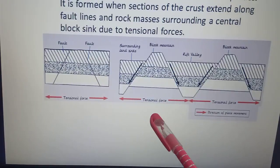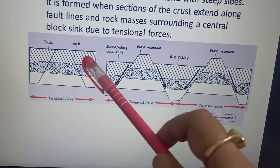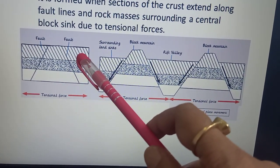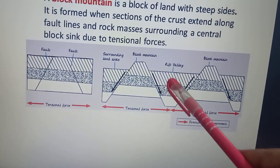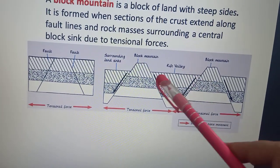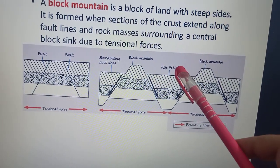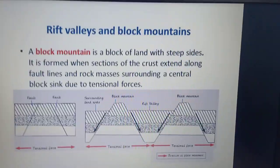I hope all of you have understood that when the rocks are subjected to tensional force, faults are created. When these big fractures are created, the rocks get displaced. And see over here, when the land in between the parallel faults sinks down, it forms the rift valley. The upstanding block forms the block mountain.